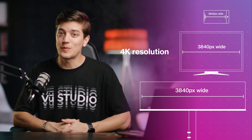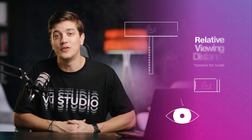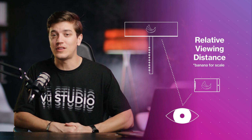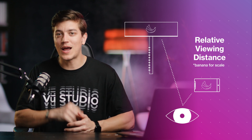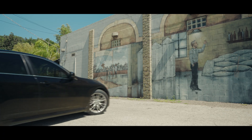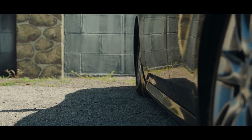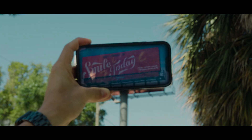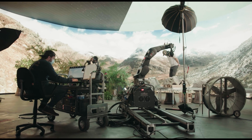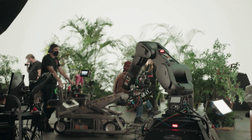The reason a billboard looks nice and sharp and crispy even though the pixels are so far apart is because of something we call relative viewing distance. A billboard is a lot farther away from your face than your phone is. Next time you're driving around, pull over and hold your phone up about arm's length next to a billboard — you'll find they're pretty close in size comparatively. So if you're choosing the correct pixel pitch for an LED display, your pixel pitch will vary based on how far the camera is from your display.